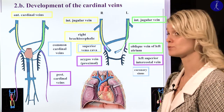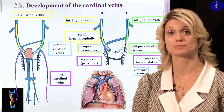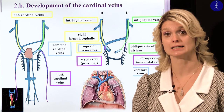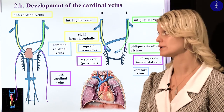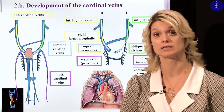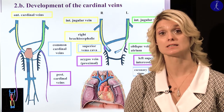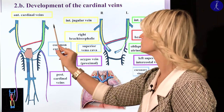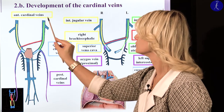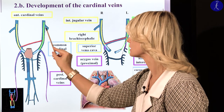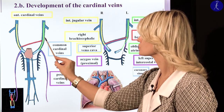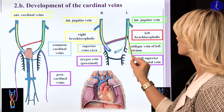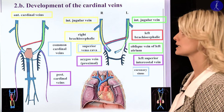It is very important that anatomical knowledge is essential for these developmental questions. I recommend learning anatomy and embryology in parallel, because anatomical knowledge is really important for understanding the development of the vessels. The communication between the right and left cardinal veins will form the left brachiocephalic vein, since the venous circulation shunts from the left side to the right side.